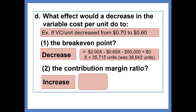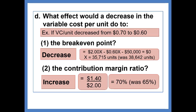The contribution margin ratio, the contribution margin now is $1.40, 2 minus 0.6, divided by 2, or 70%. It had been 65% if you crunch those numbers. So, this just proves that it will result in an increase in the contribution margin ratio.